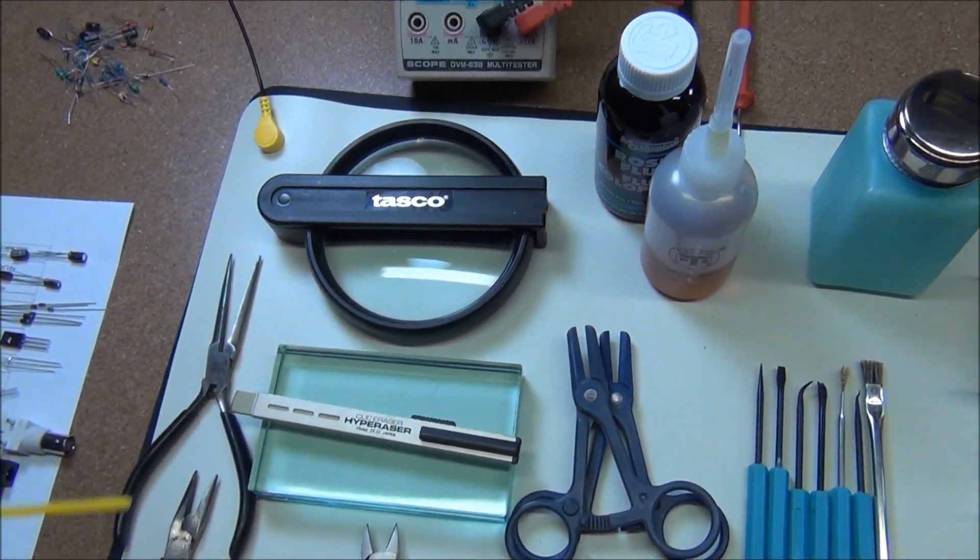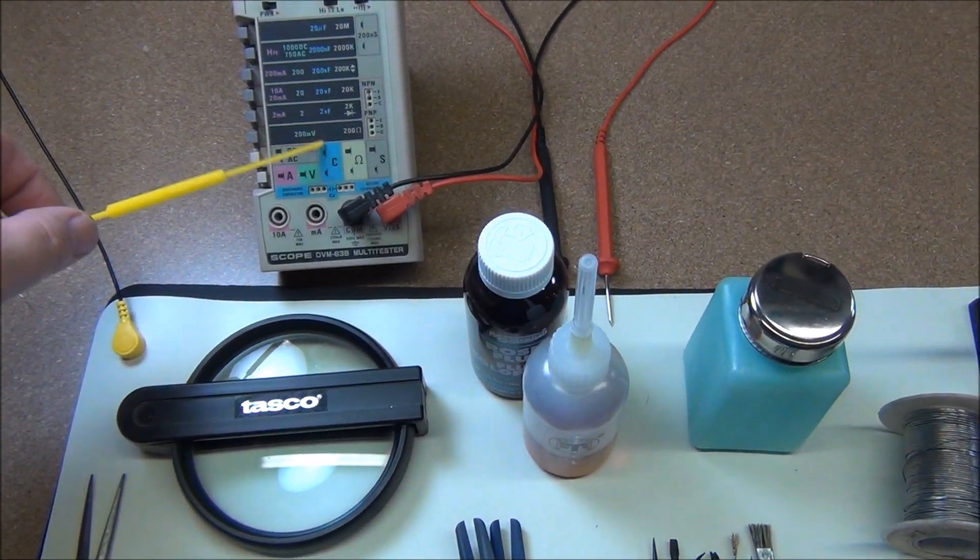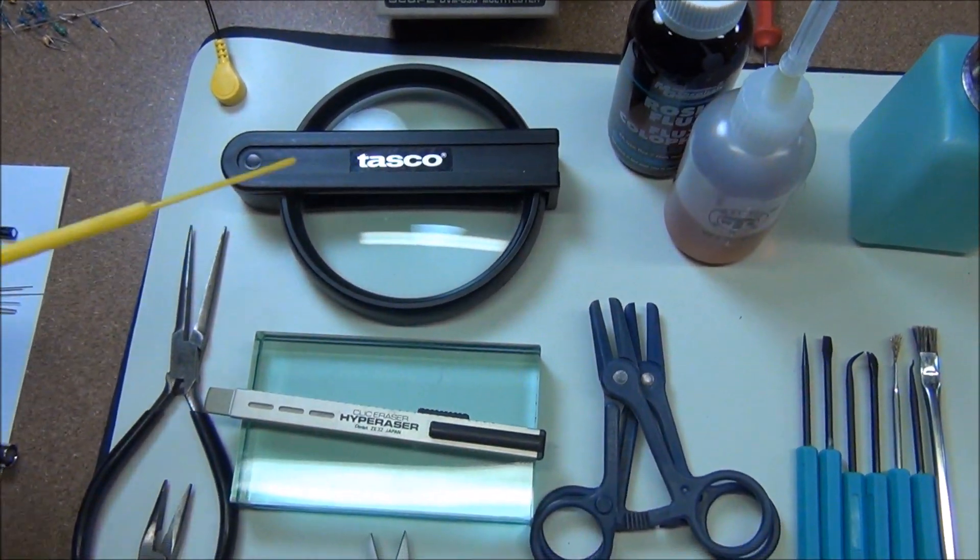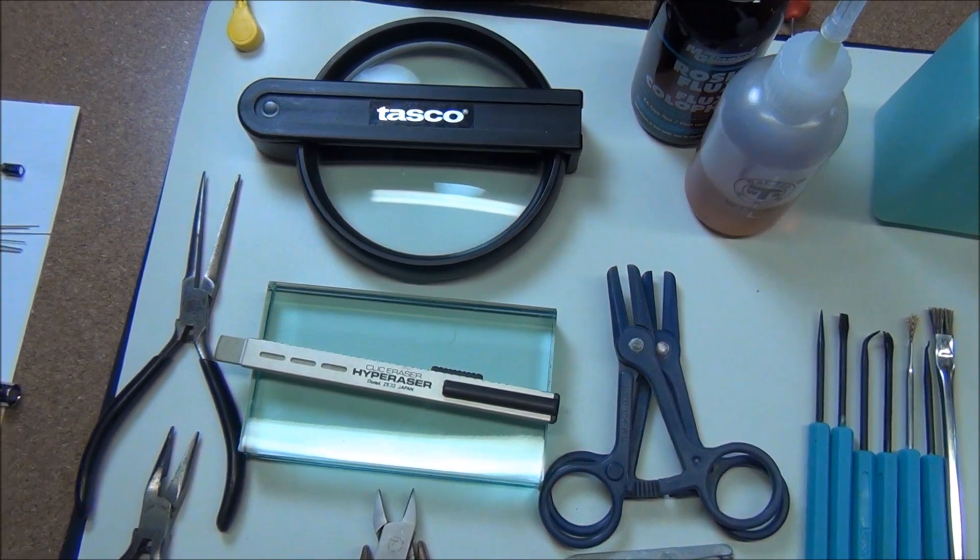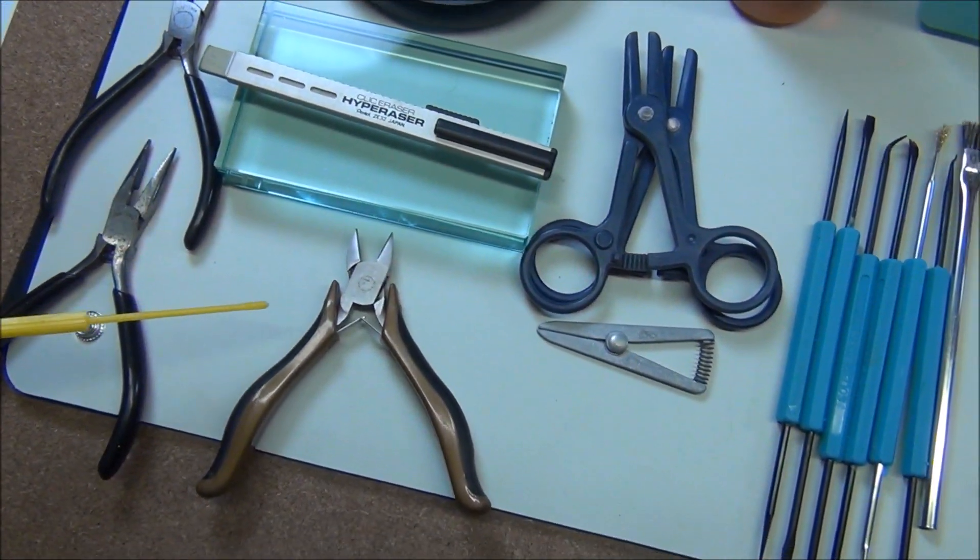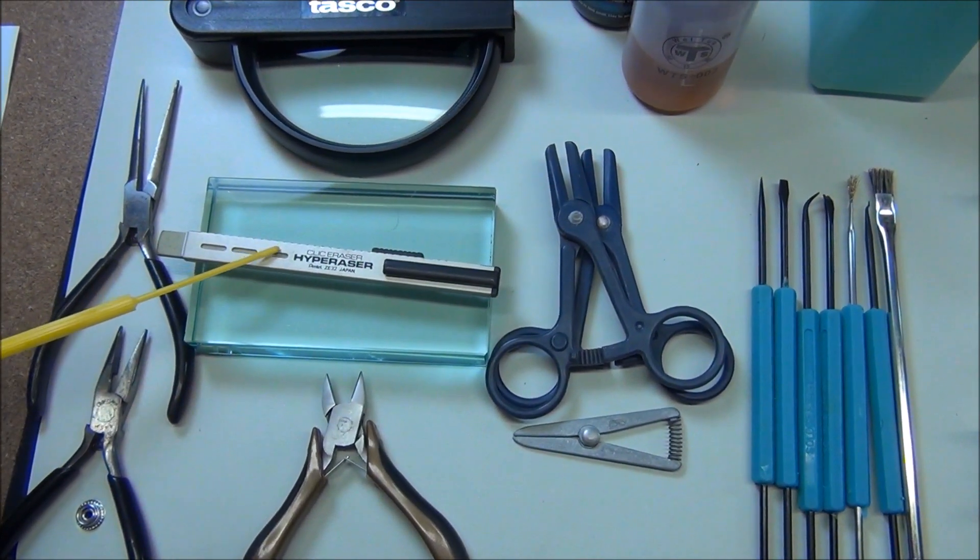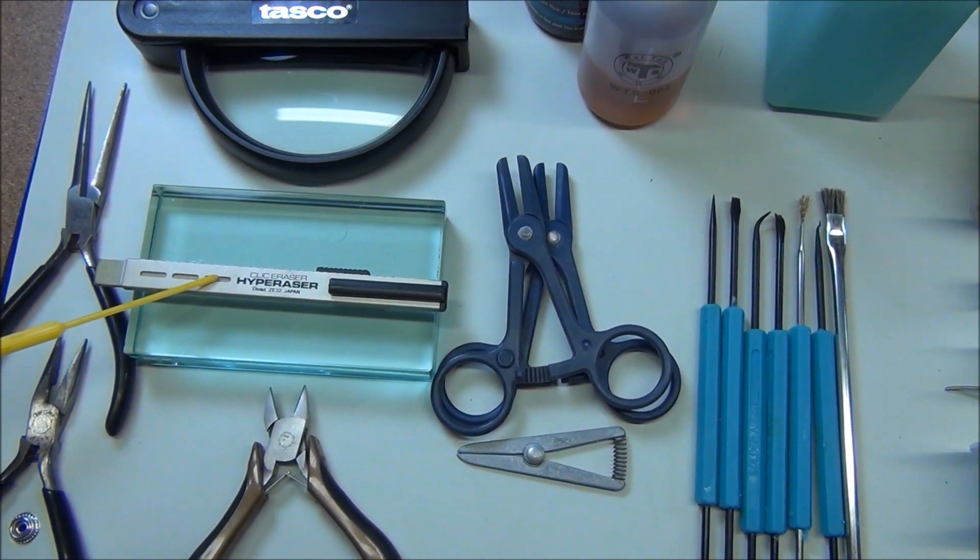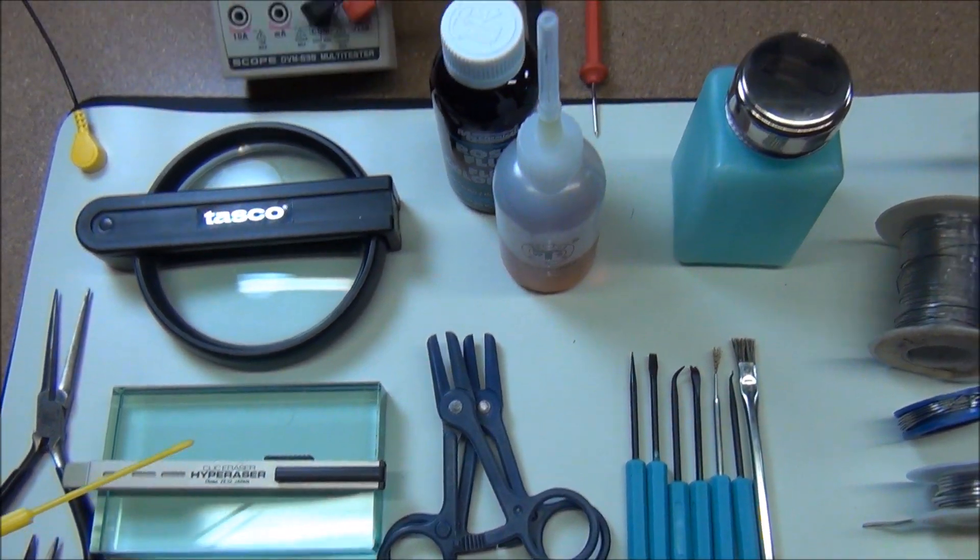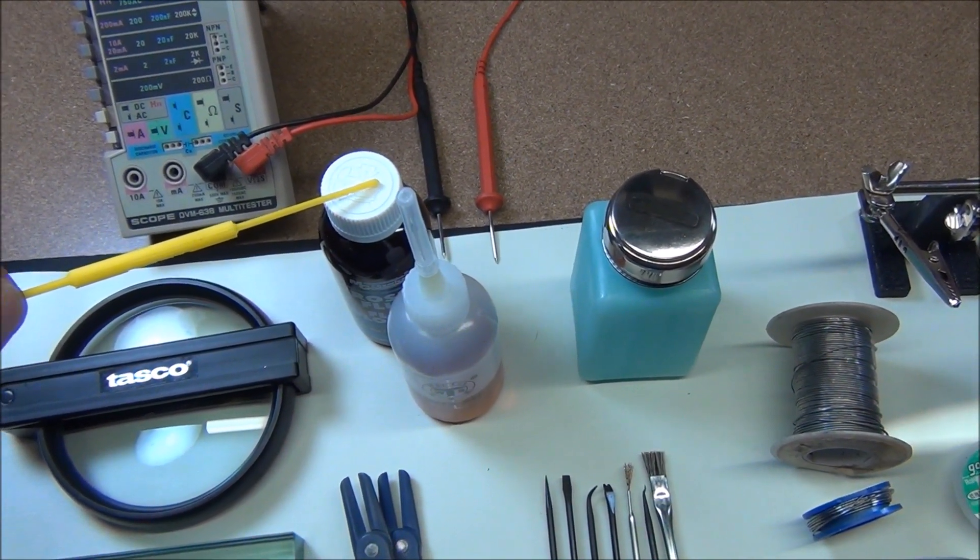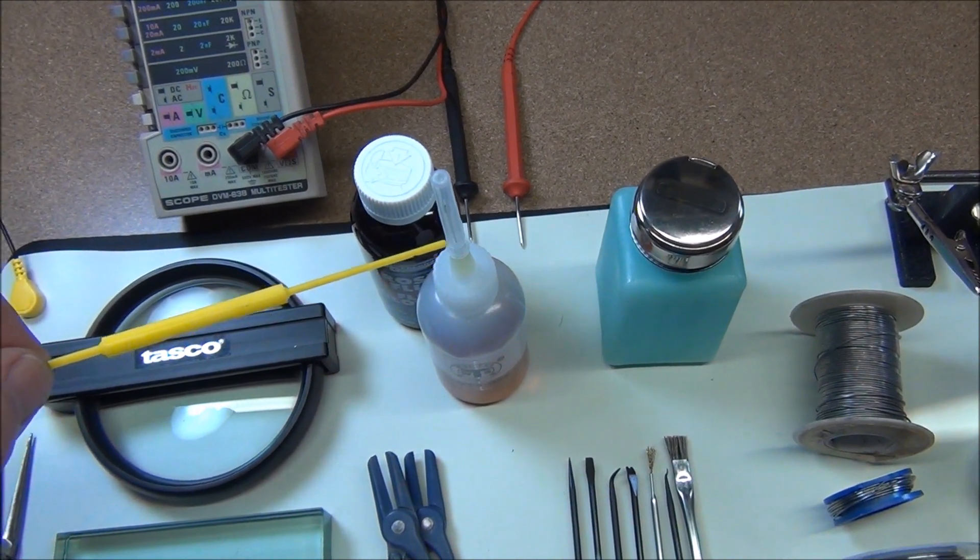A multimeter for verifying components prior to installing them, a big magnifying glass, a couple different types of needle-nose pliers, flush cutters, a glass block, and a pencil eraser for cleaning components. I use liquid rosin flux in a bottle with a little needle on it.